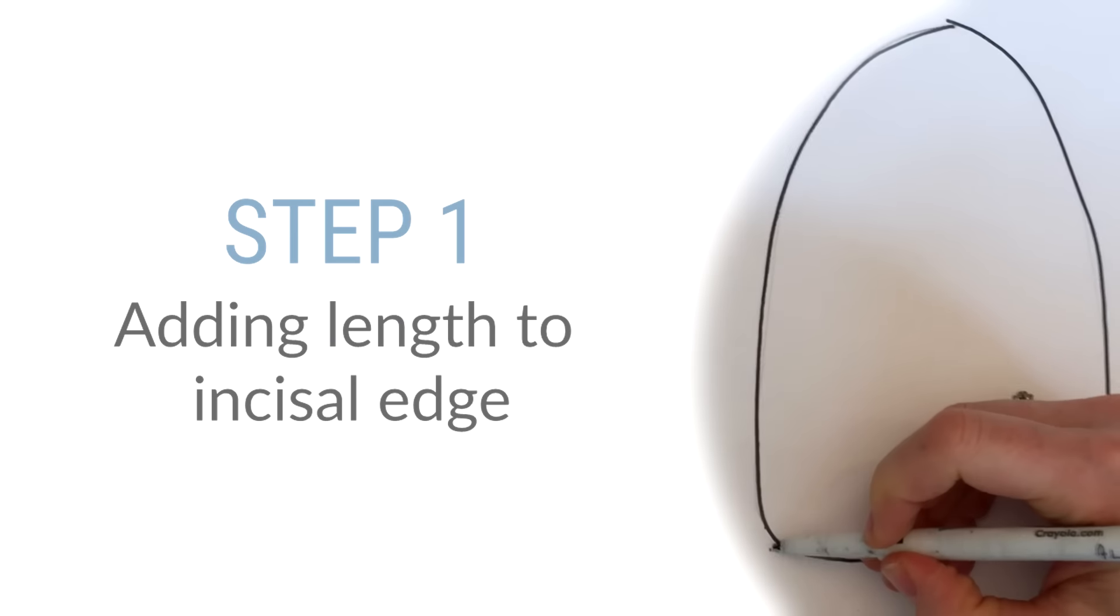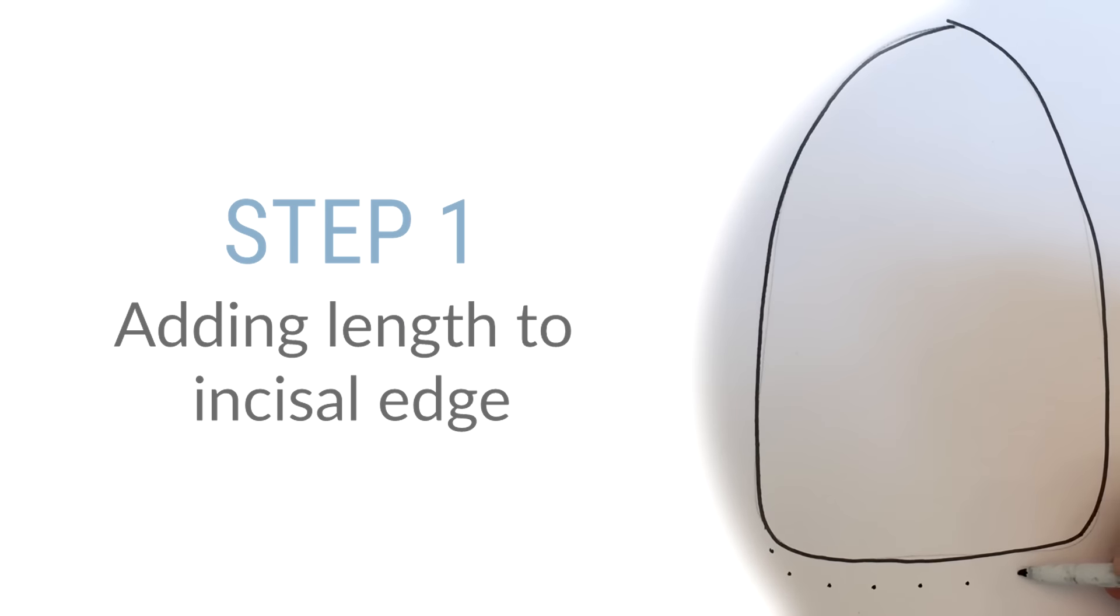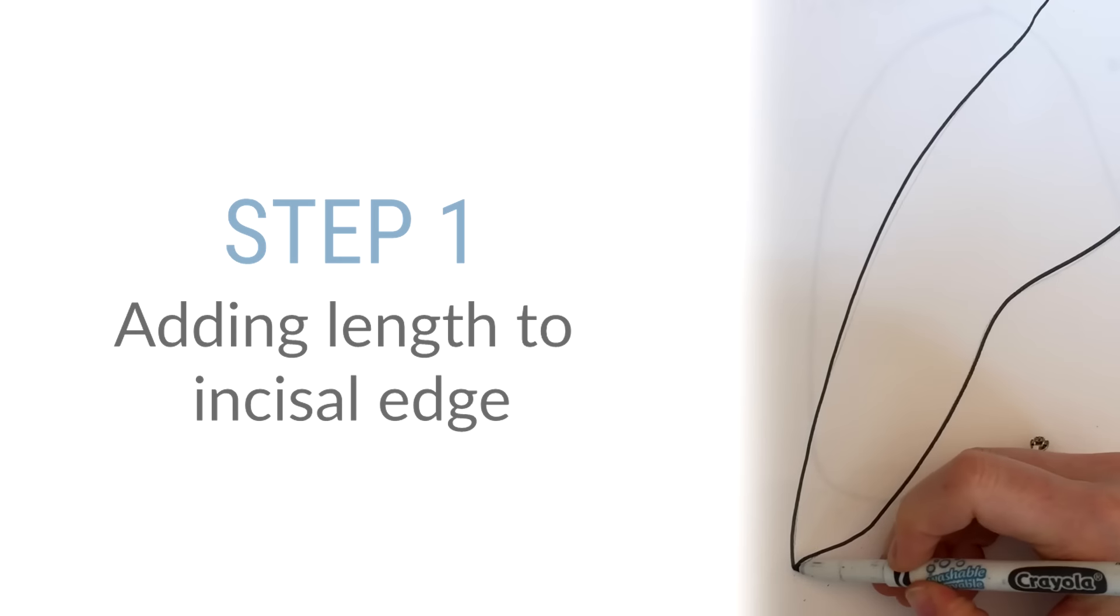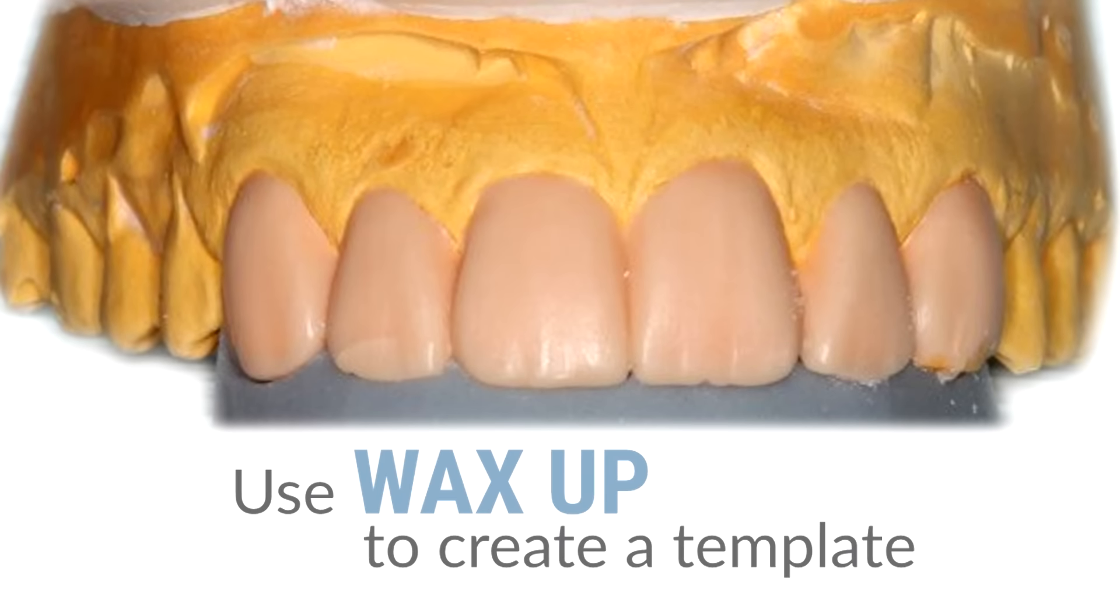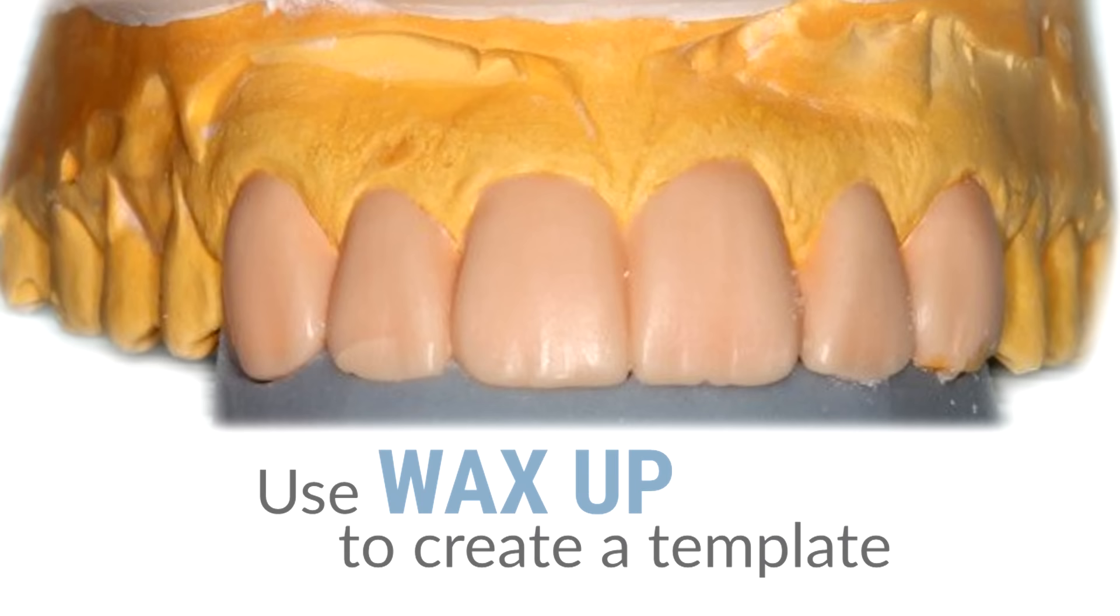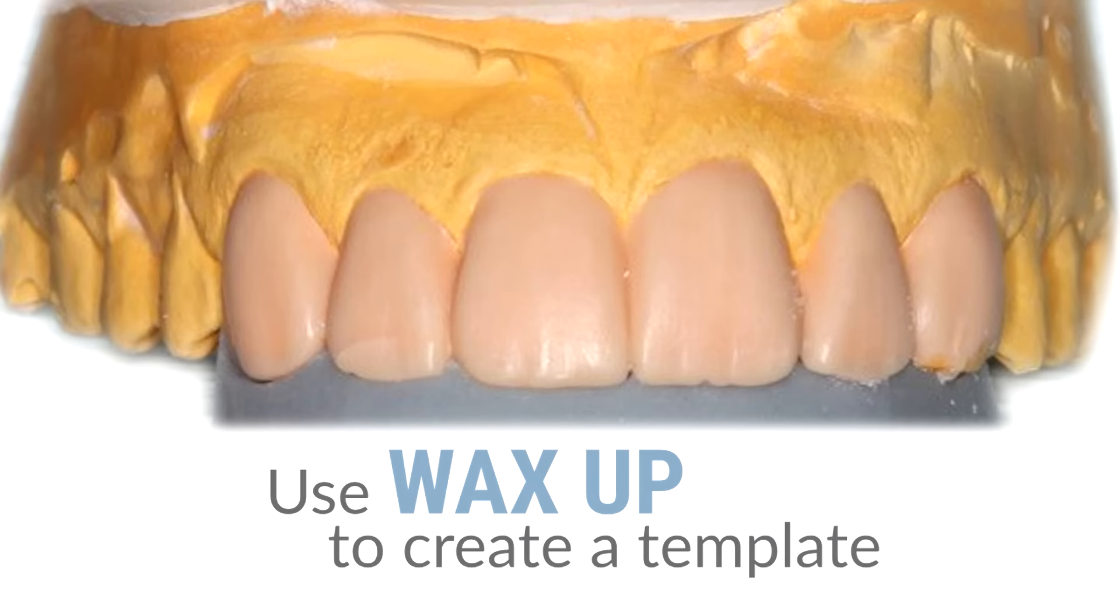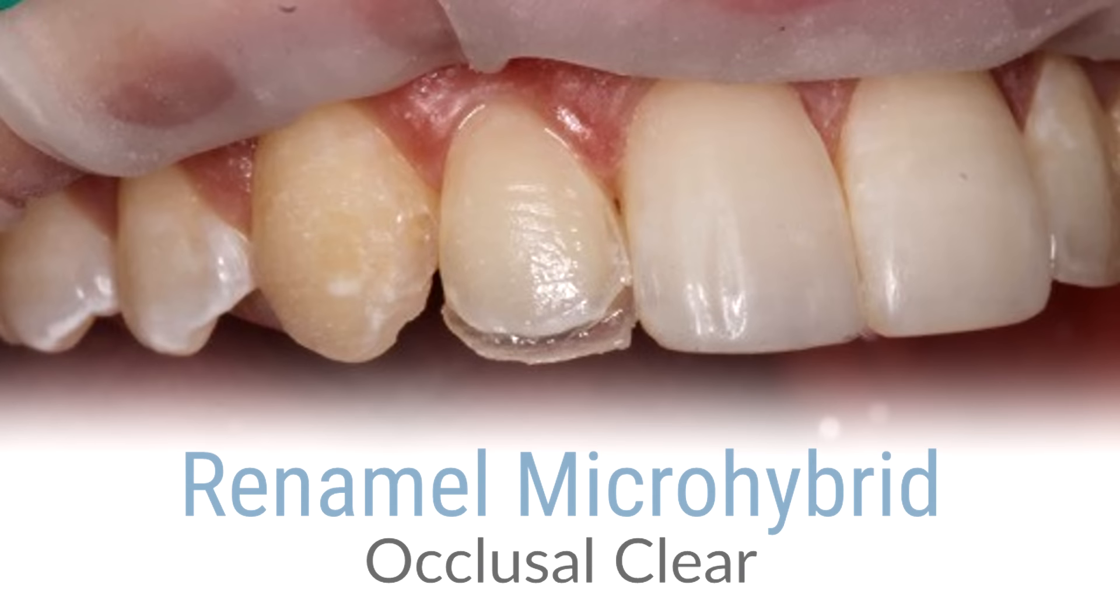So first of all, to give some incisal translucency, what I did is that I added a little bit of length to the centrals. So we're really going to focus on the centrals for this particular exercise. By using the wax-up that was done by my laboratory technician, I used a lingual matrix and I built up very lightly with Occlusal Clear. This is a completely transparent hybrid, so you have to put a very light coat.